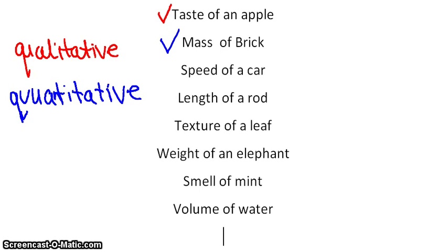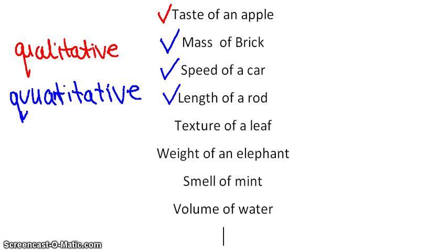Our next example is speed of a car, which is also quantitative data. The length of a rod is also quantitative data, because these can all be measured. Remember that. Texture of a leaf — when you're feeling a leaf, that is something from your senses, so that is qualitative data.